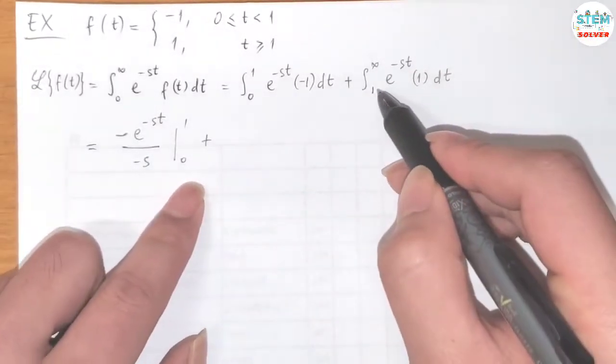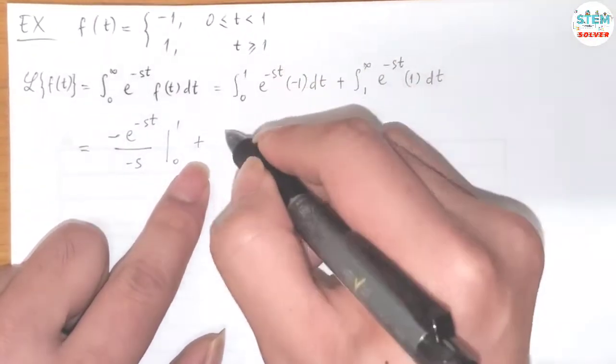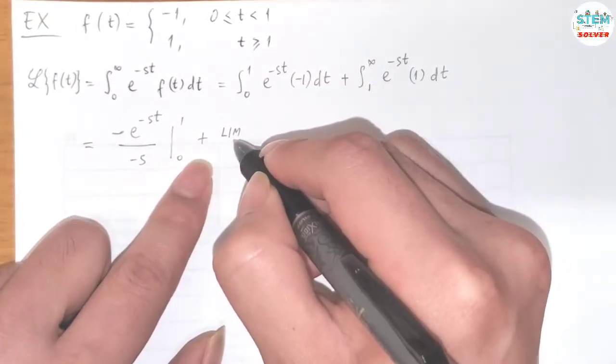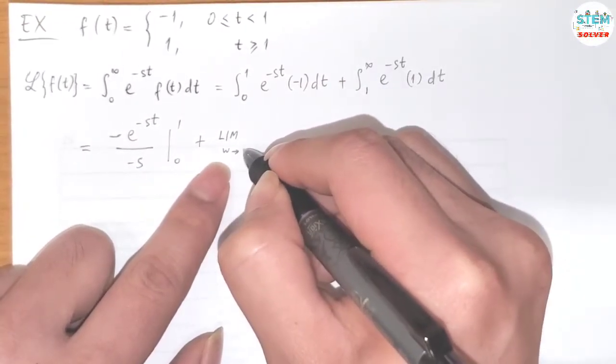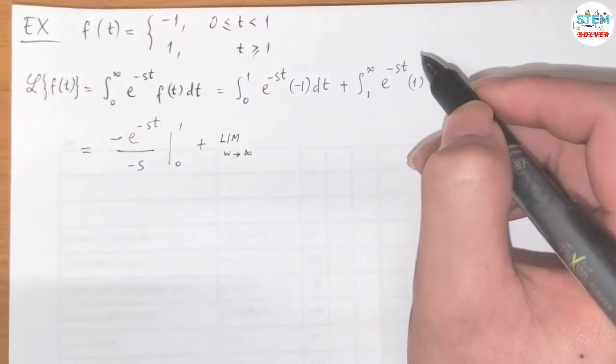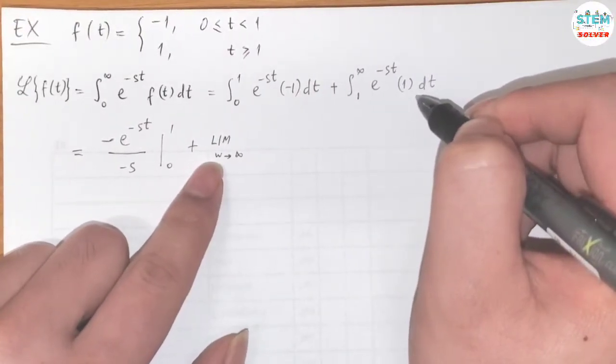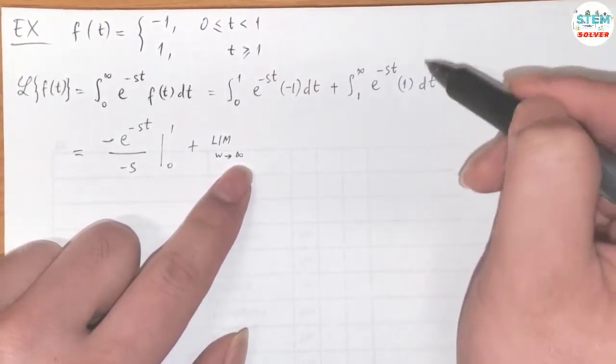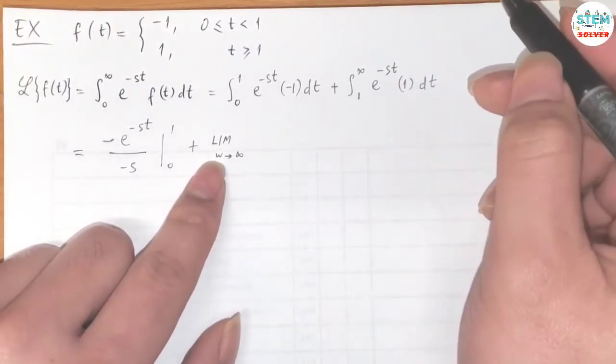Plus, this is the improper integral, so you have a limit. So we have limit as w goes to infinity. Normally we have limit from t to infinity, but because we already have t here, I'm going to call it a different variable. So I use w here instead of t.